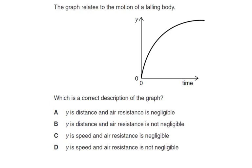The graph relates to the motion of a falling body. Which is the correct description of the graph? Well, if y is speed and the air resistance is not negligible, eventually you're going to reach terminal velocity. And that is what's happening here — you're still going to reach terminal velocity. So the answer is D.